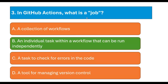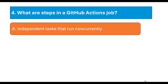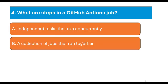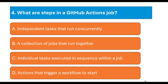Let's move to question number 4: What are steps in a GitHub Actions job? Option A: Independent tasks that can run concurrently. Option B: A collection of jobs that can run together. Option C: Individual tasks executed in sequence within a job. Option D: Actions that trigger a workflow to start. Please pause the video and try to answer. The correct answer is Option C: Individual tasks executed in sequence within a job.